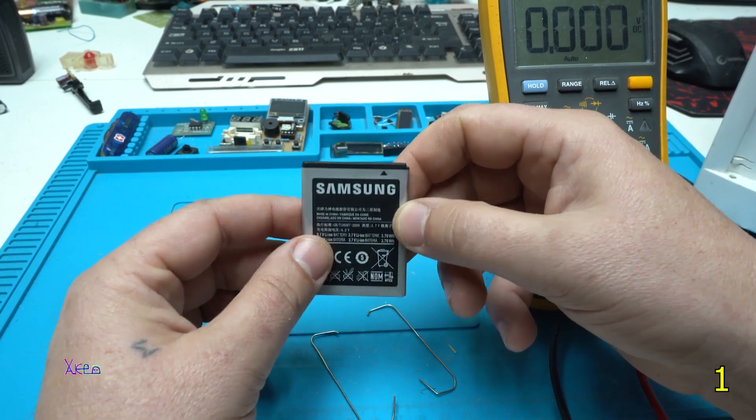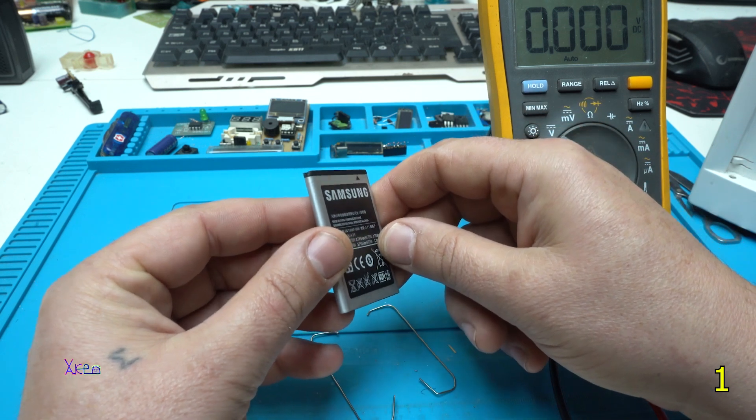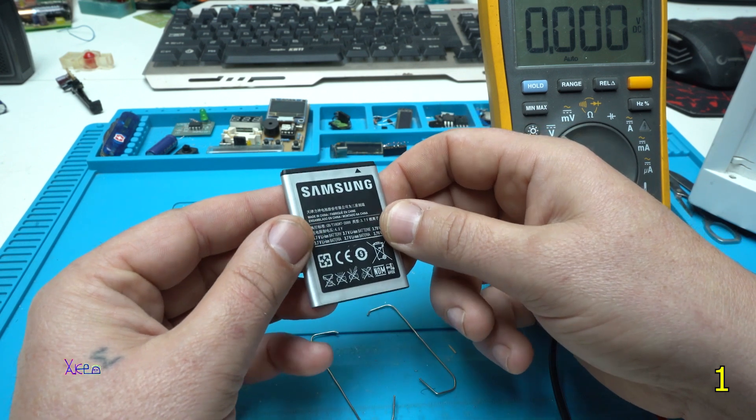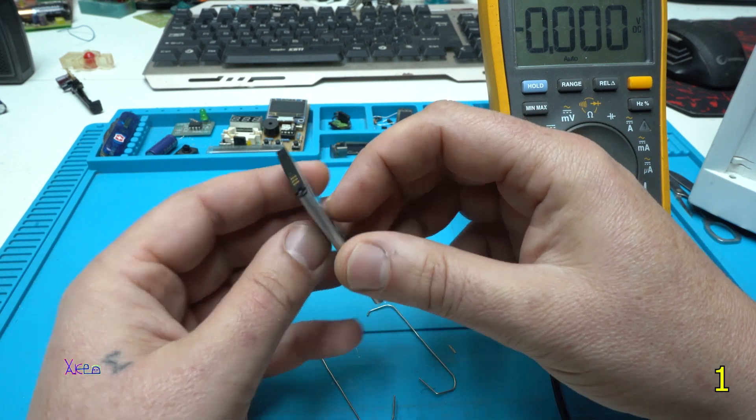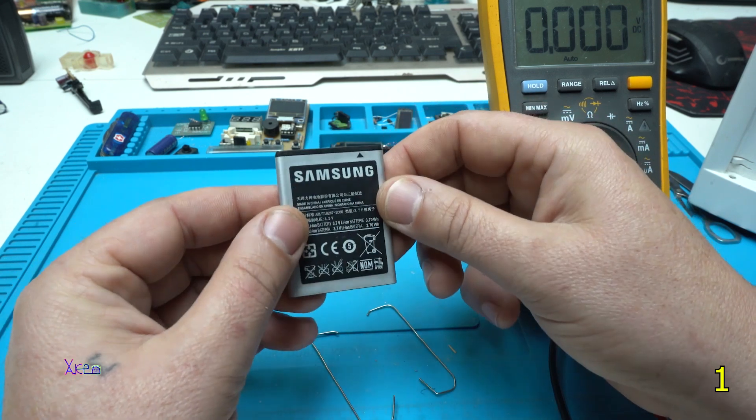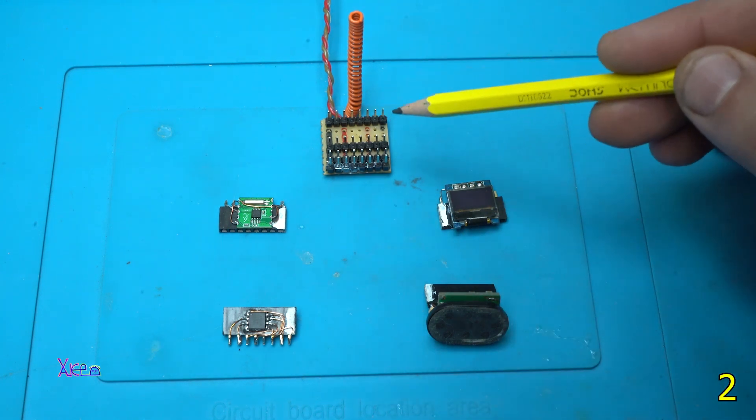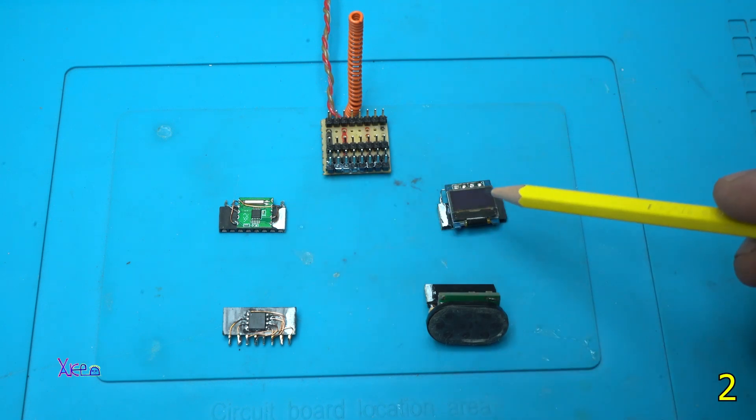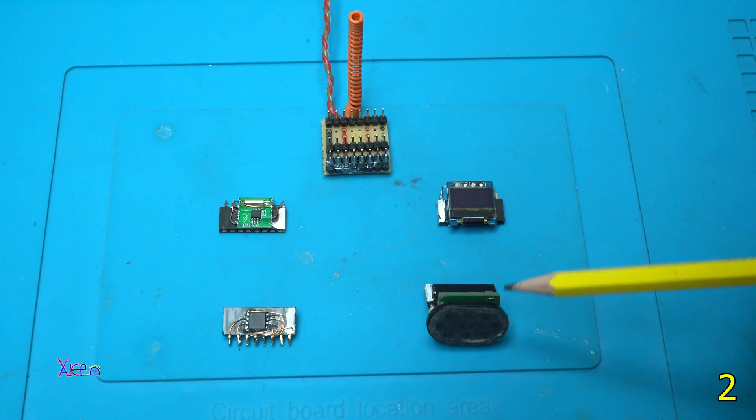And now you have a charged battery using paper clips and external power supply or donor battery. That was a quick and easy life hack to charge a removable battery from phone. We have five modules. This is the main board model, radio receiver model, OLED screen model, ATtiny85 microchip model, and speaker with amplifier model.